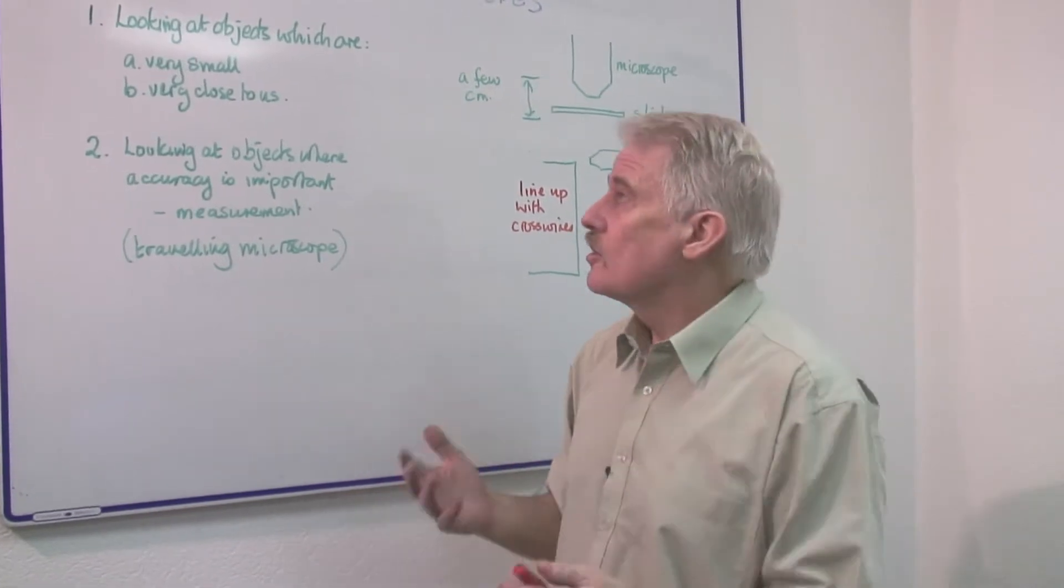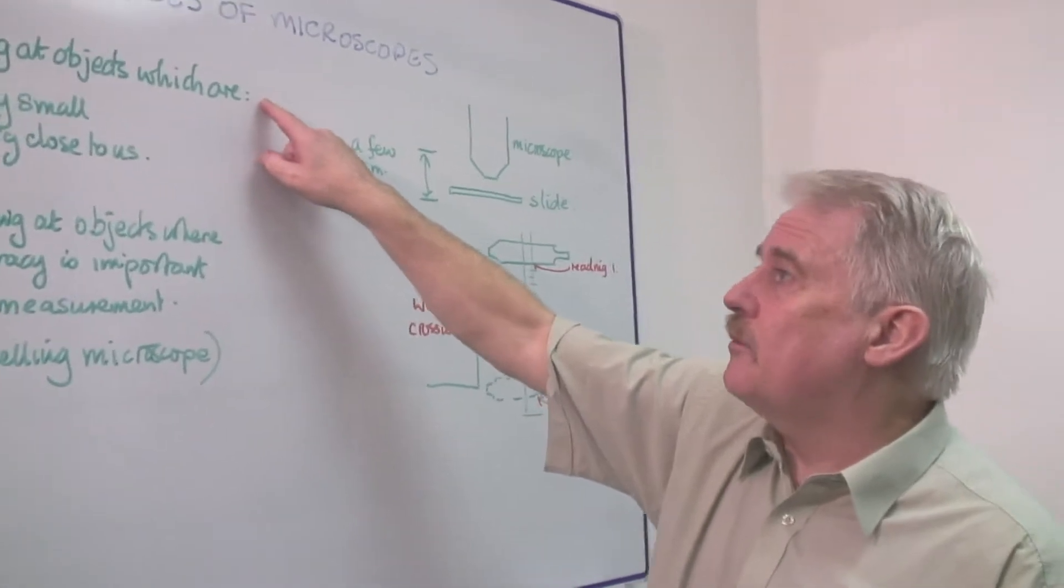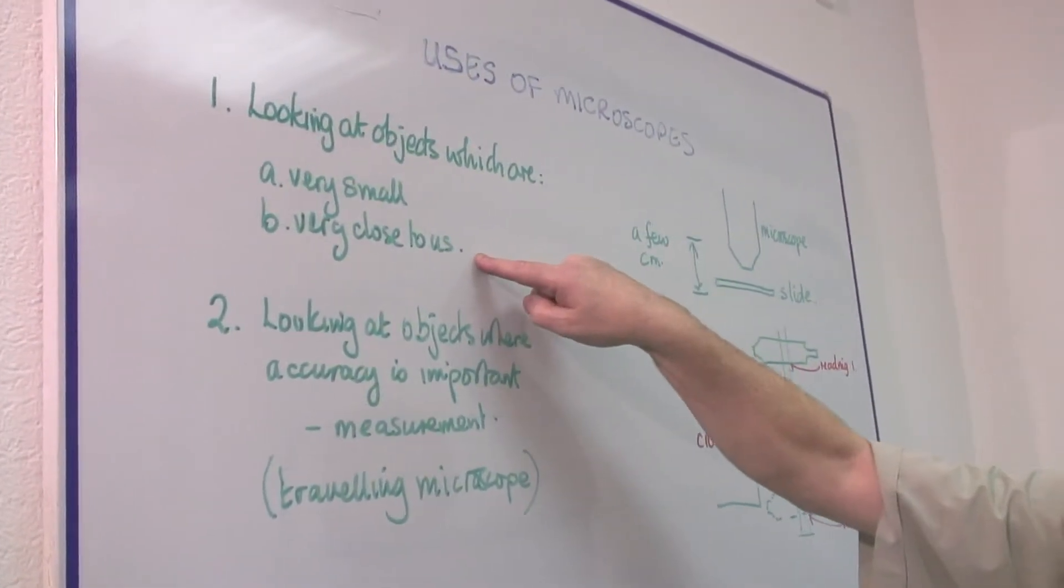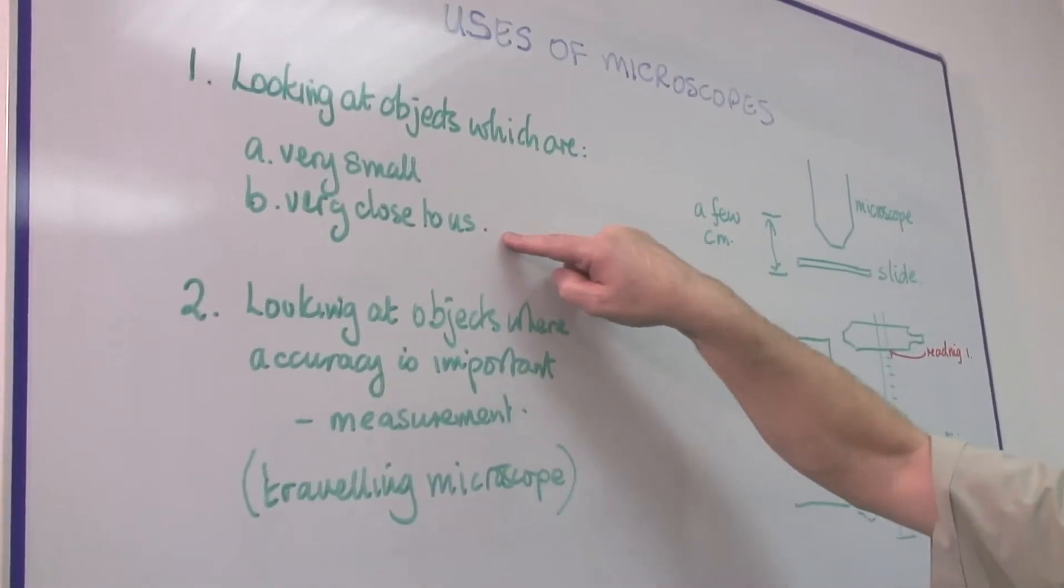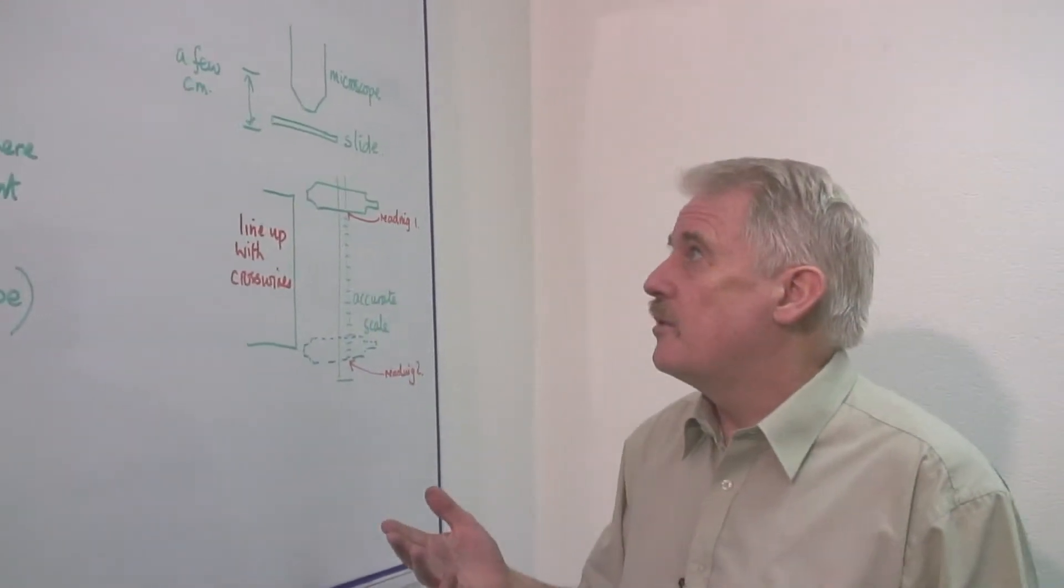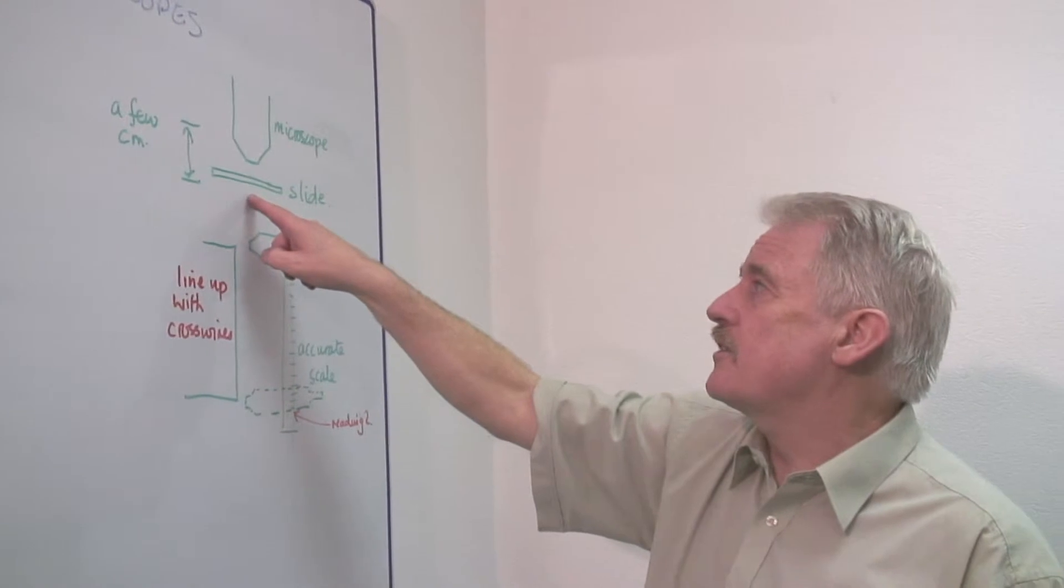But basically, to summarize what microscopes are for, it's for looking at objects which are both very small and very close to us. We can't use a microscope, for example, to look at the sun. For that, we use a telescope. The microscope is always within a few centimeters of the things we look at.